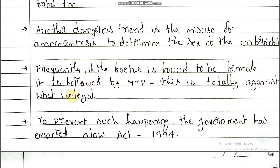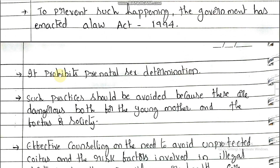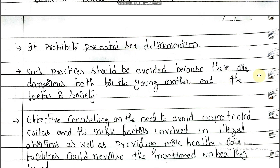To prevent such things from happening, the government enacted a law in 1994 against this misuse. This act prohibits prenatal sex determination. Such practices should be avoided because these are dangerous both for the young mother and the fetus, and for society as well.